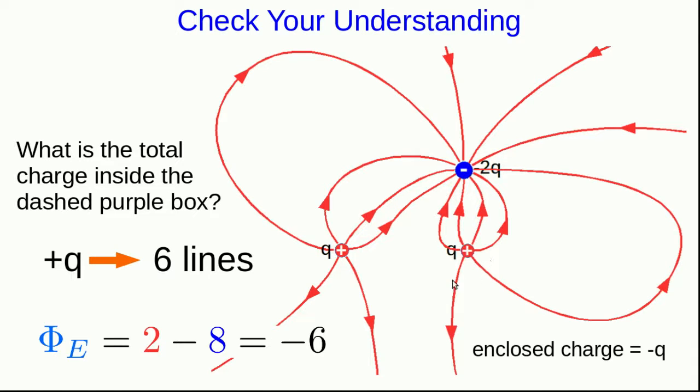And you can verify for yourself that there are six lines coming out of this positive q and 12 lines going into this negative 2q. And so I've drawn the diagram correctly. But one thing for you to try out is try some different surfaces that all enclose these two charges.